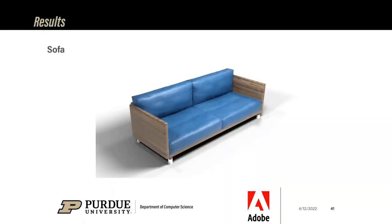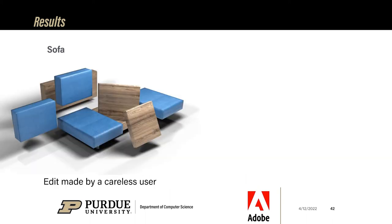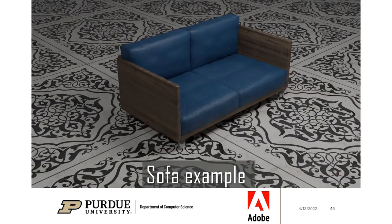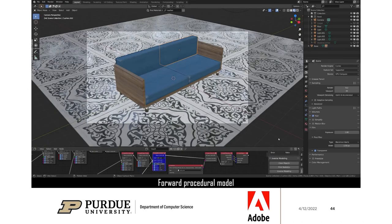The first result is the sofa, an example of furniture. An important property about procedural modeling in general, and our system specifically: since the procedural model encodes the shape and input parameters are bounded, the result of any edit — even a silly one — will give you a valid model. In other words, nothing can go wrong. Here we show an interactive editing session with the sofa.